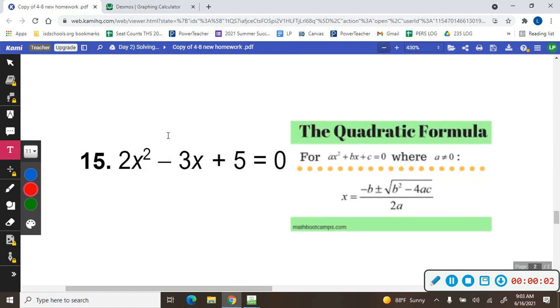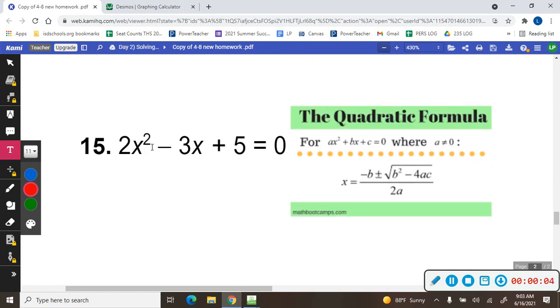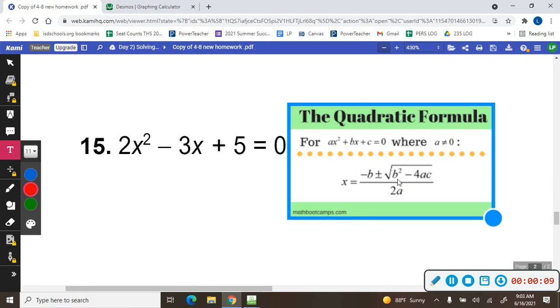So we're going to try to find the solutions to 2x squared minus 3x plus 5 equals 0. And we're going to use what's called the quadratic formula.